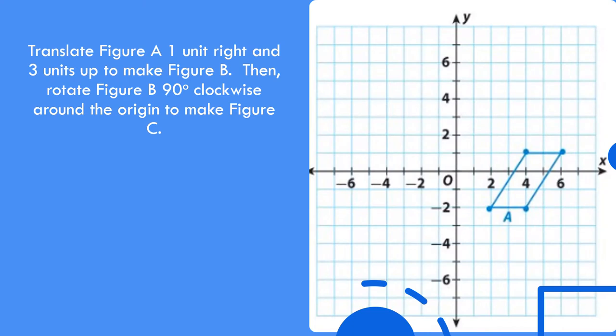Let's take a look at our first example. It says, translate figure A one unit right and three units up to make figure B. Then rotate figure B 90 degrees clockwise around the origin to make figure C. The reason this lesson is on multiple transformations is notice I have to do two things to figure A. The first thing I have to do is translate it, and then after I translate it, I have to rotate it.